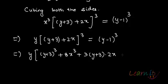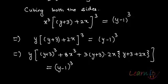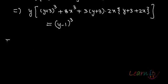plus 3(y + 3) into 2x times (y + 3 + 2x), this equals to (y - 1) whole cube.